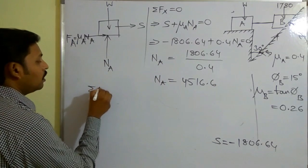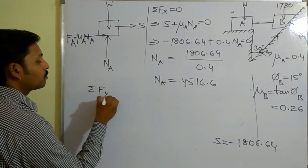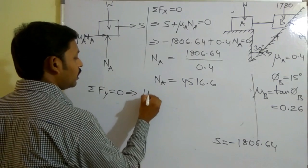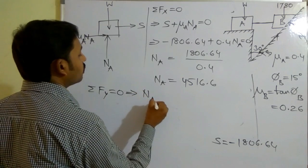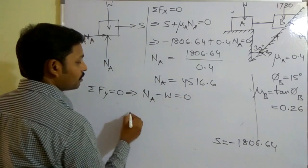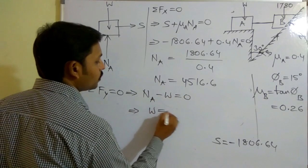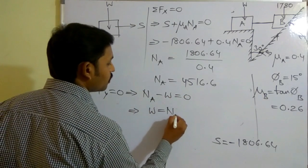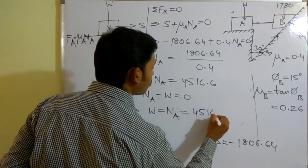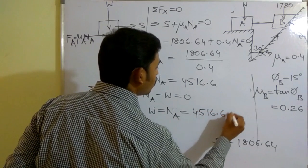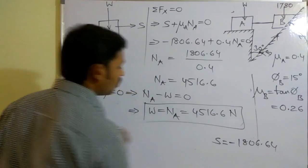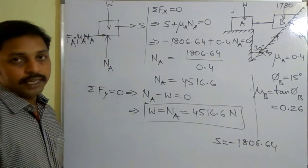Now consider Σfy = 0 for block A. N_a acts vertically upwards and weight W acts vertically downwards. Therefore W = N_a = 4516.6 N. This is the weight of block A.